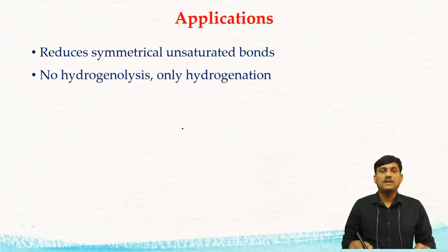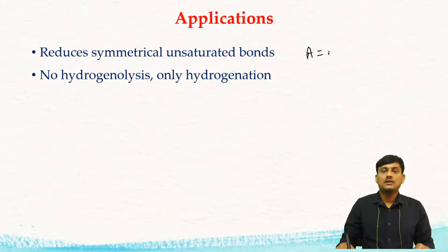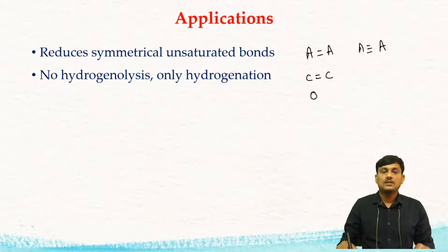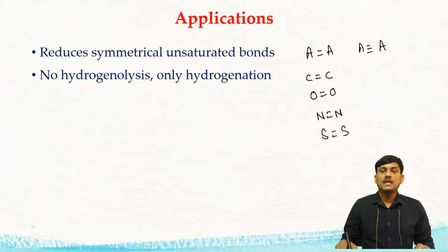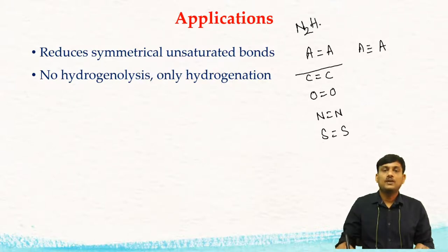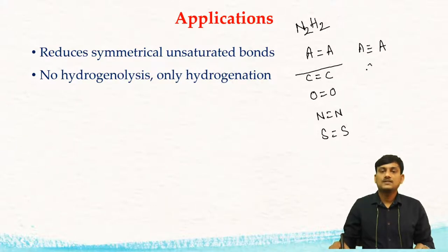Applications of diazene: diazene can reduce symmetrical unsaturated bonds — A double bond A, A triple bond A. For example, C=C, O=O, N=N, or S=S. These types of symmetrical unsaturated bonds can be reduced by using diazene. We can also reduce symmetrical unsaturated triple bonds such as C≡C.